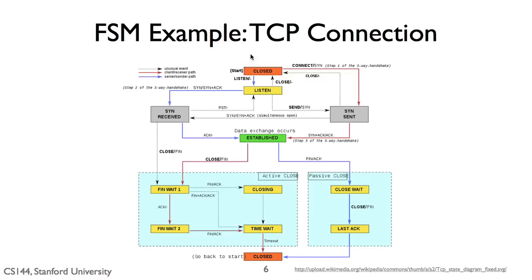These top four states describe how you open a TCP connection. This center state, 'established,' is when TCP is sending and receiving data — after the connection has been established but before it's been closed. These six states describe how connections close. The state at the bottom, 'closed,' denotes the connection as closed and the node can forget about it. Note that the top state is also the closed state, before we open the connection.